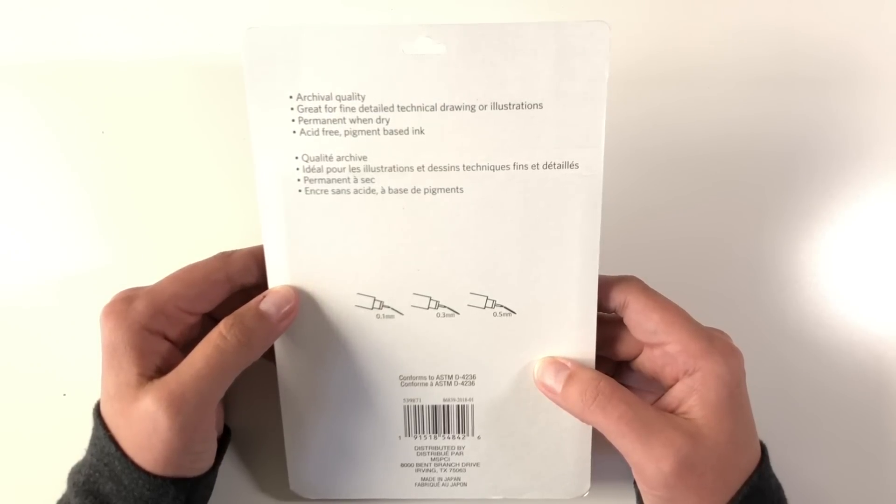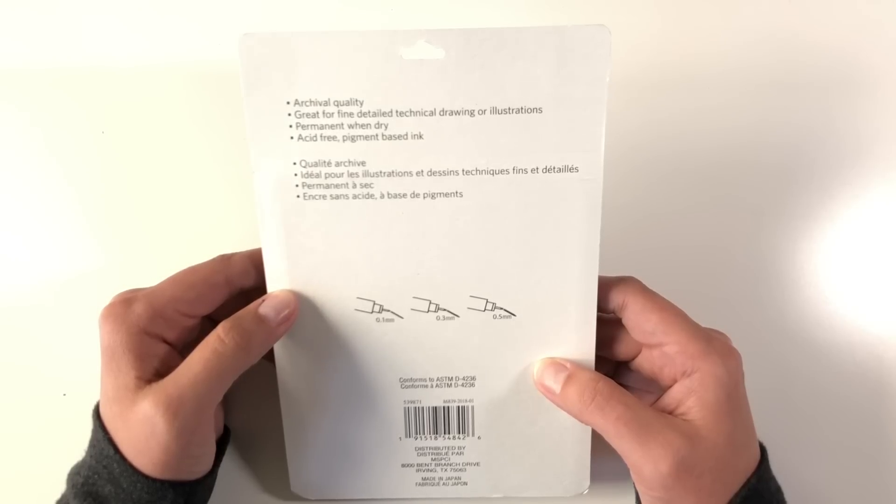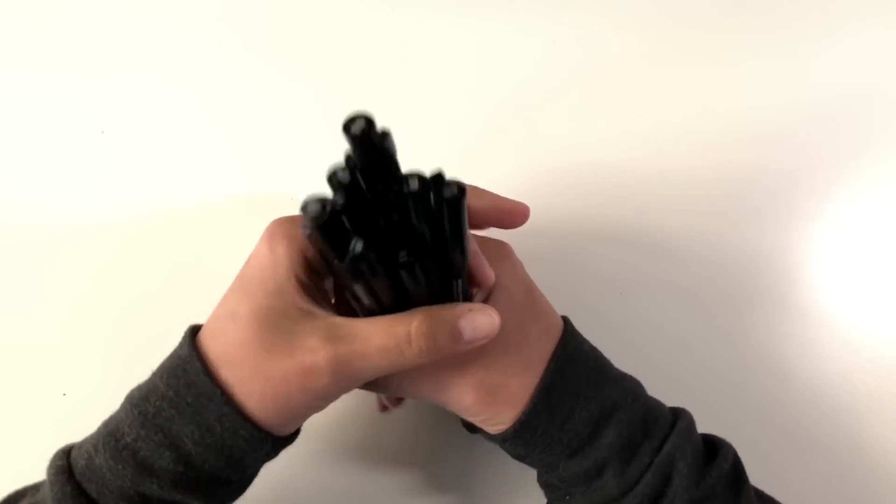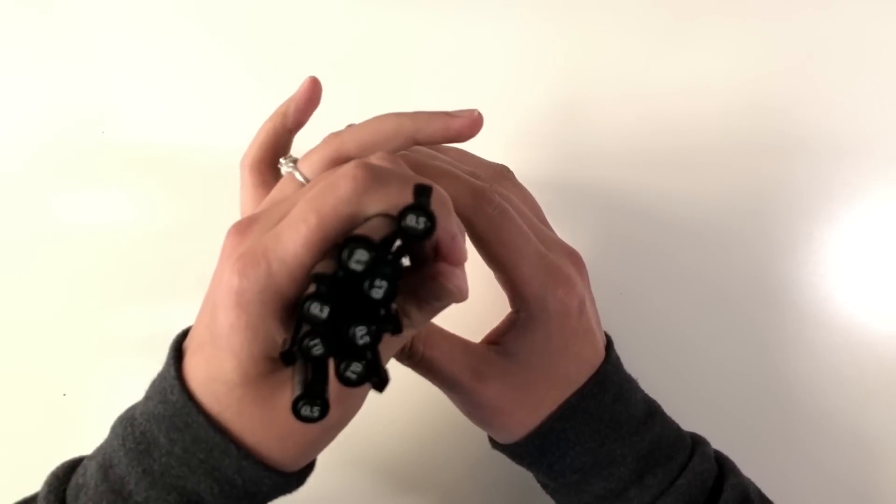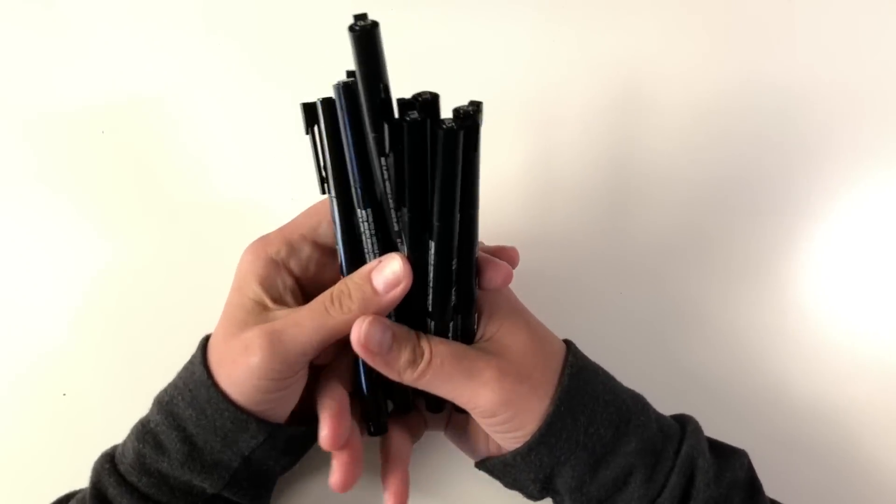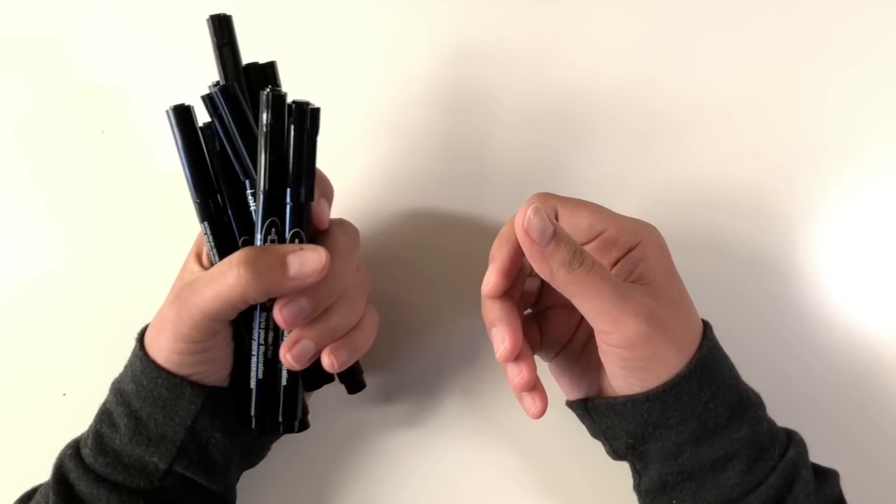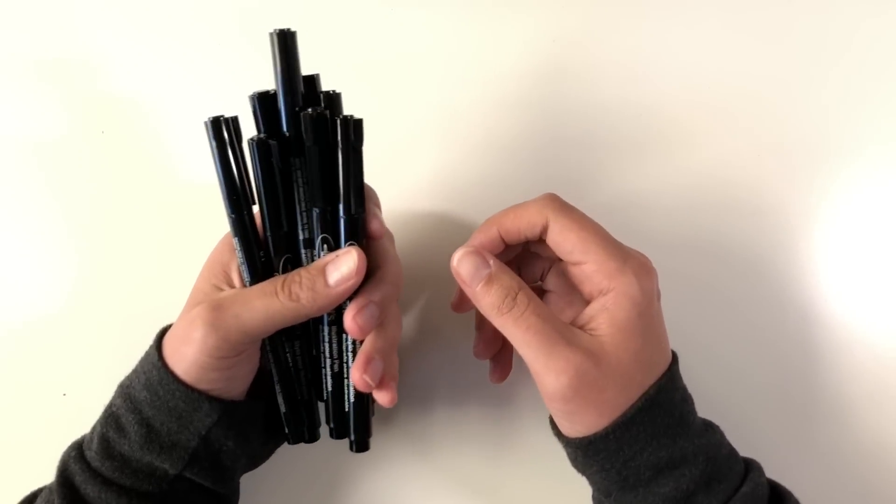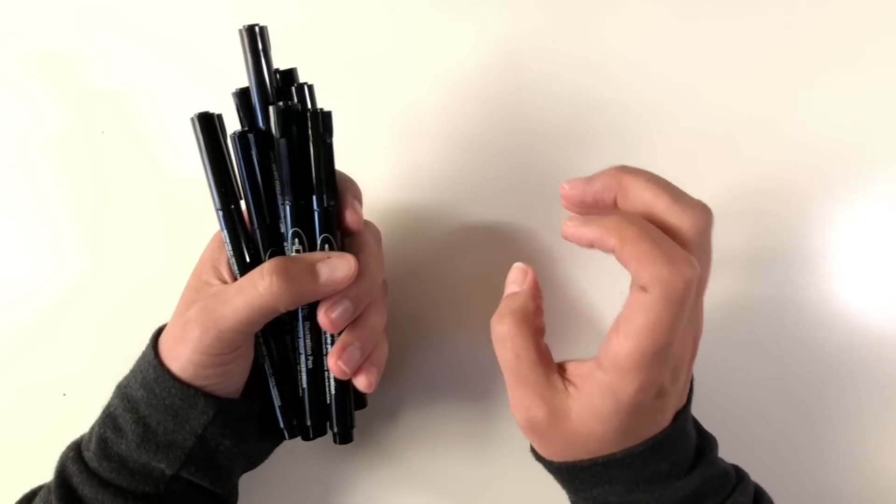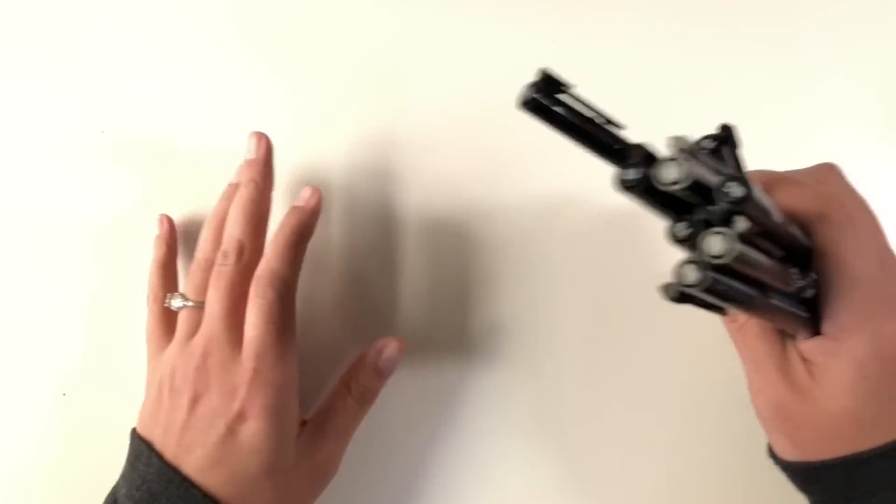According to the specs, they are archival quality, great for line detail, technical drawing or illustrations, permanent when dry, acid-free pigment-based ink. So in this value pack, you get two each of the 0.1 and the 0.3 millimeter, and then four of the 0.5, which honestly, I would prefer more of the 0.1 because I find that finer tipped pens tend to break down faster when you're heavy-handed, whereas the bigger tips like a 0.5 don't tend to do that on me.